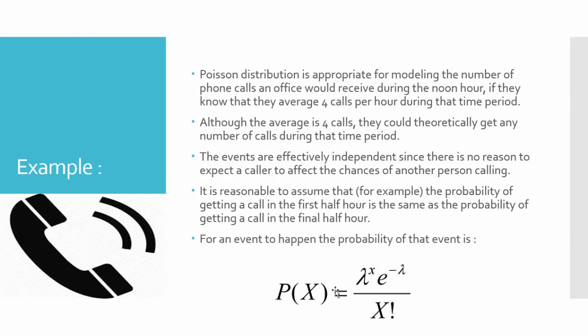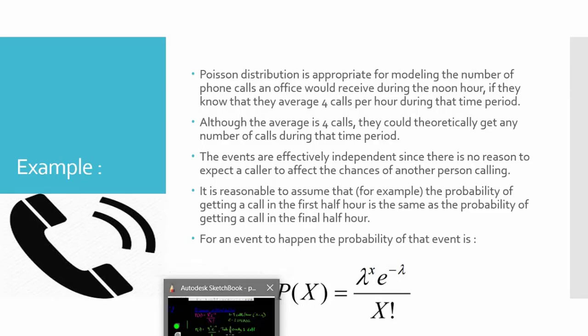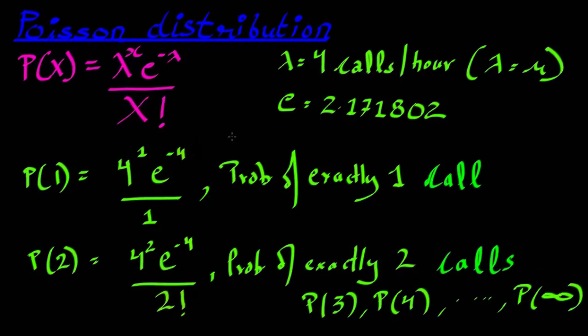Where e is the constant, divided by x factorial. Let's try to model this distribution and see how it goes. So what we have, we have this formula of the Poisson probability distribution.